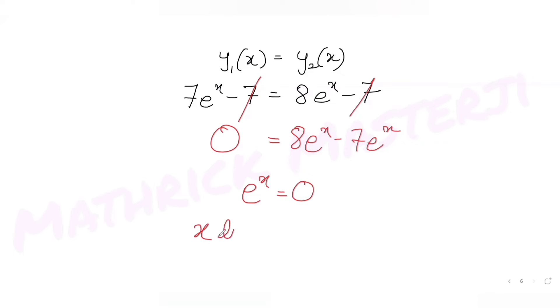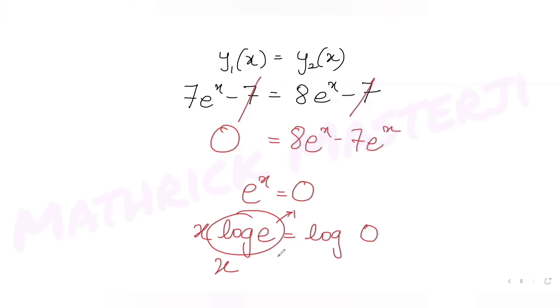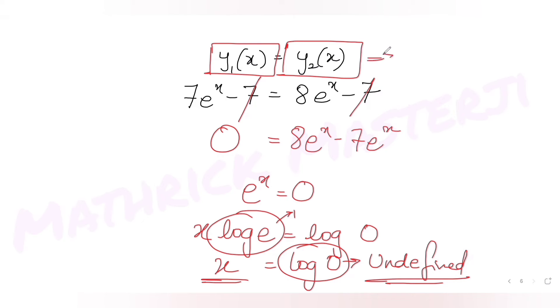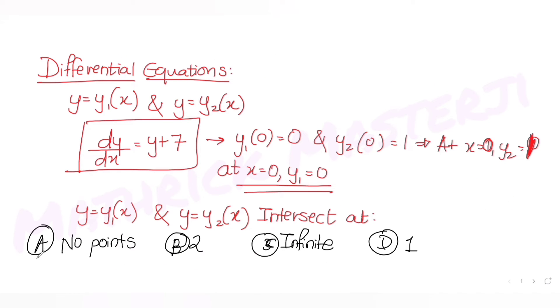Taking logarithm on both sides: x · log(e) = log(0). Since log(e) to base e equals 1, we get x = log(0), which is undefined. Since we get no valid value for x, the two curves have no intersection points. The correct answer is option A.